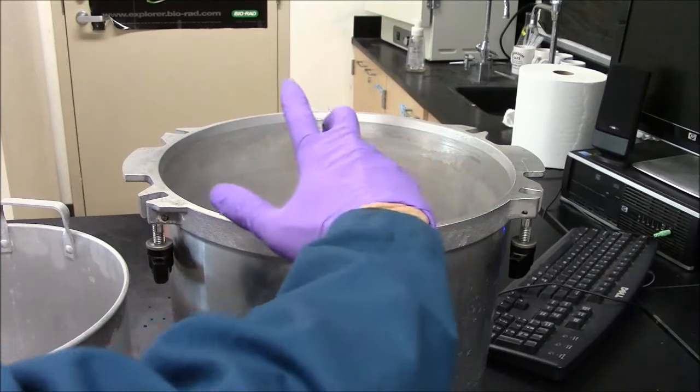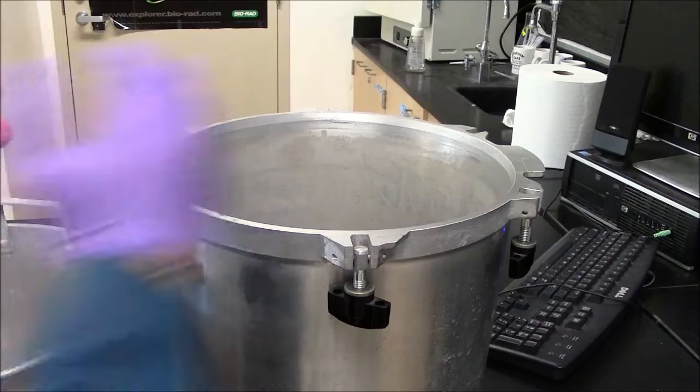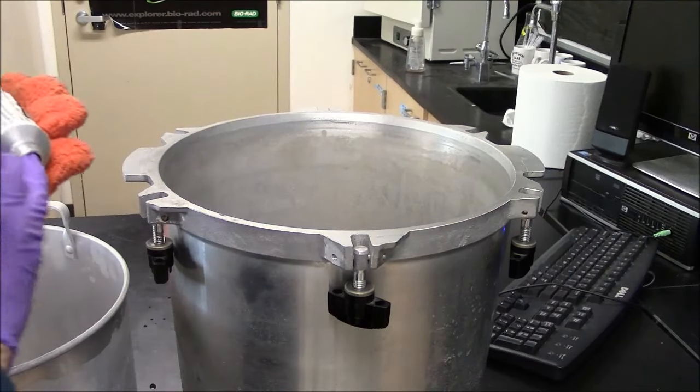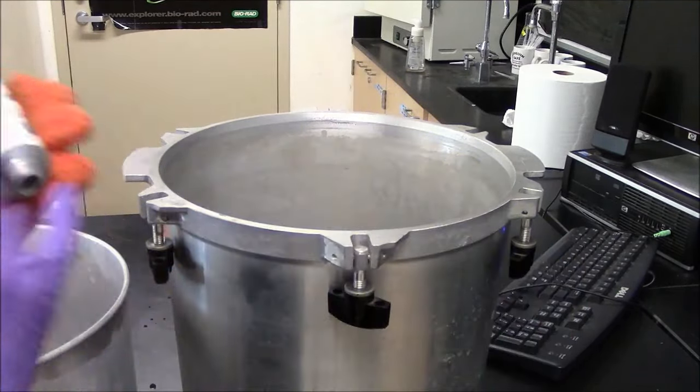To help the seal I can put the vacuum grease around the rim here. It's best to do this when the pot is cold.